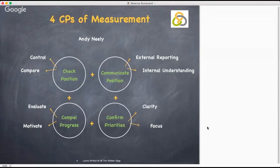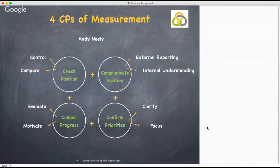There are four positions: check position, communicate position, confirm priorities, and compel progress. They are sequential. Check position — they enable control by allowing managers to see where the organisation is in relation to its plan and its competitors.